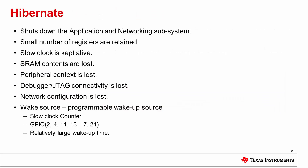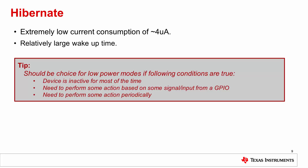Hibernate, unlike LPDS and sleep, affects both the apps and network processors, resulting in extremely low current consumption. It essentially shuts down the chip with only a small number of registers retained. The slow clock counter is kept alive across this mode, but network configurations are lost. An interrupt from the slow clock counter can wake the system from Hibernate, and a specified set of GPIOs can also be set as a wake up source. Though current consumption is extremely low, it has a relatively larger wake up time than LPDS. This mode is ideal for cases where the device will be inactive for most of the time and will only perform some action periodically or based on GPIO activity.